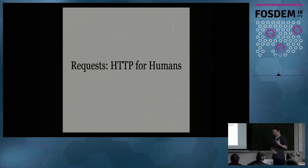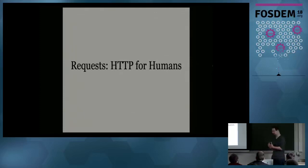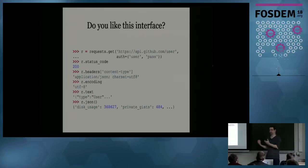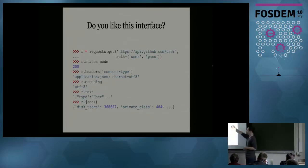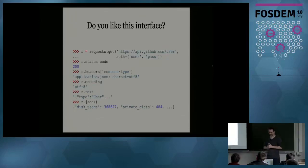Then a person called Kenneth Reitz came and realized this can't be like this anymore, and wrote a library called requests. The claim of this library is it's HTTP for humans. With the requests library, it looks like this — just the first line is usage of the library, the rest is just inspecting the response. We basically got a one-liner which is readable, writable, maintainable. It's beautiful.